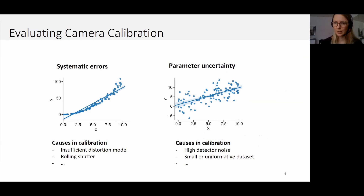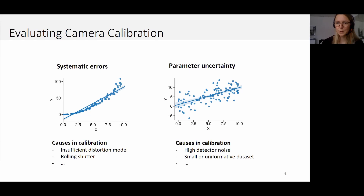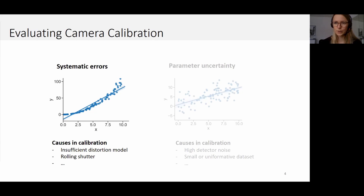Camera calibration is subject to two types of errors: systematic errors and parameter uncertainties. Systematic errors occur if the chosen camera model is not capable of modeling the true geometric behavior of the camera — for instance, if we only allow for radial lens distortion but in fact have strong tangential distortion. Parameter uncertainties, on the other hand, refer to the precision with which parameters could be estimated based on the available data. I'm going to present two methods to capture these two fundamental types of errors, starting with systematic errors.